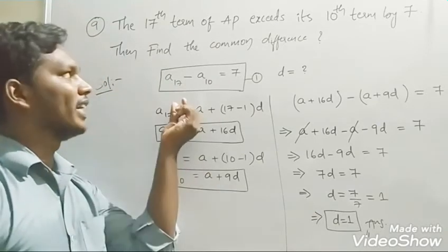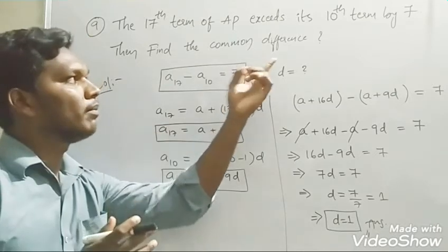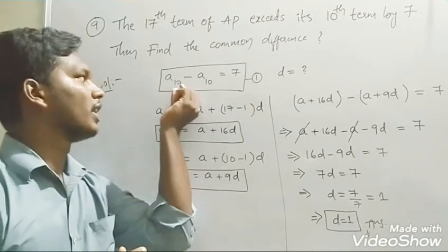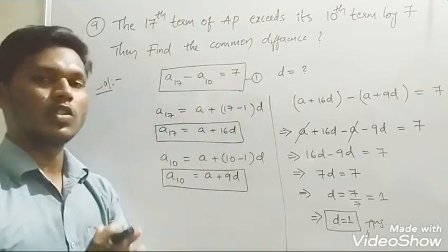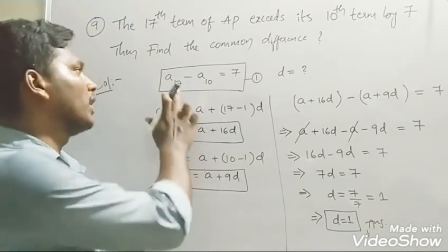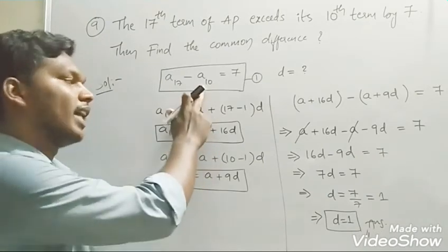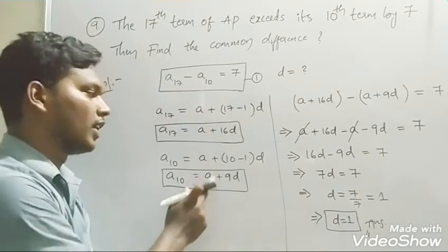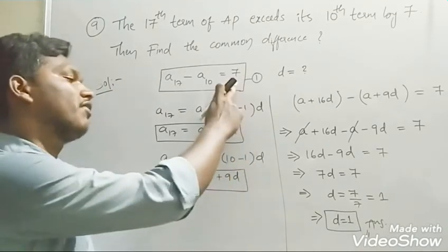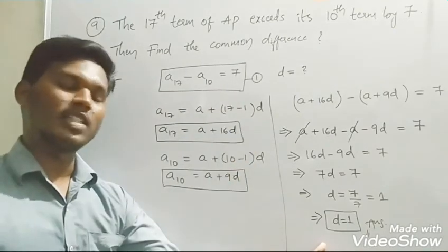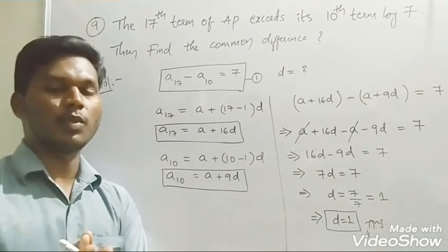To summarize: the 17th term exceeds the 10th term by 7 means a₁₇ minus a₁₀ equals 7. Using a₁₇ equals a plus 16d and a₁₀ equals a plus 9d, substituting gives the common difference d equals 1.